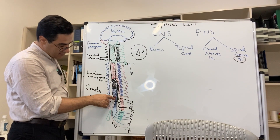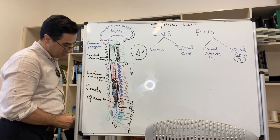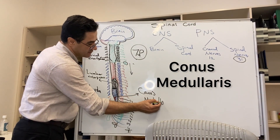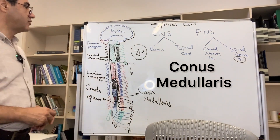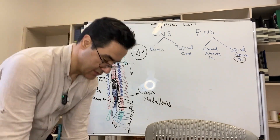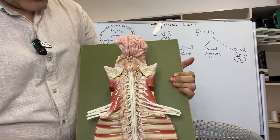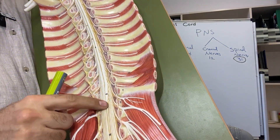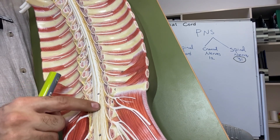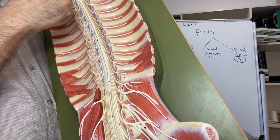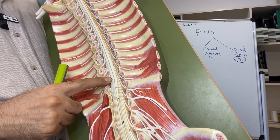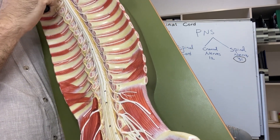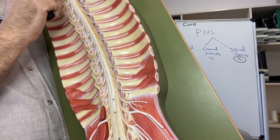The lower end of the spinal cord has a cone shape, which is known as the conus medullaris. On this model you can see the spinal cord, and the distal end with its cone shape is the conus medullaris. You can also see the cervical, thoracic, lumbar, sacral, and coccygeal parts of the spinal cord, and how the spinal nerves exit through the intervertebral foramina. Thank you.